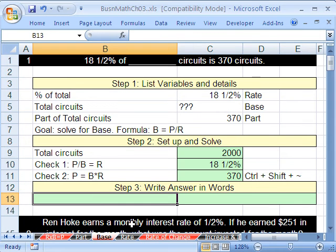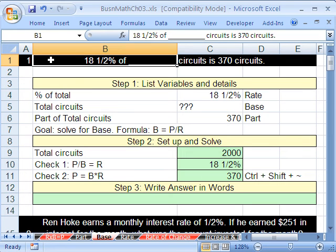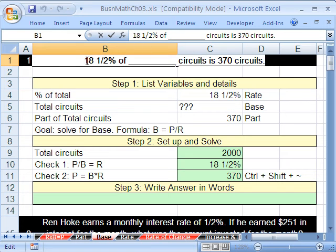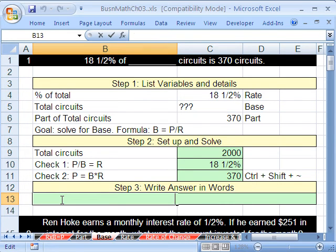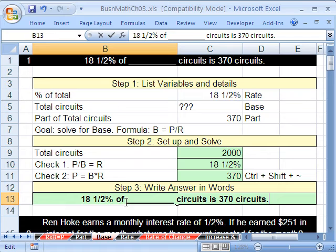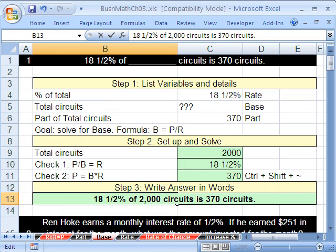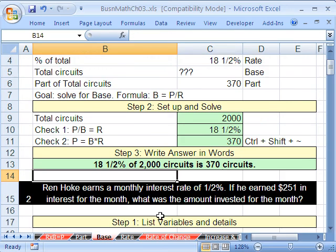Now we're going to write our answer in words. Watch this, I'm just going to come up here in F2 and I'm going to scoop this out, because we can literally just use the exact words from up here. I highlighted it, copy, now I'm going to hit Escape, I'm going to come down here and hit F2, which puts it in edit mode and paste. Watch this, I'm just going to highlight this little underline here and type in our answer, 2000. Eighteen and a half percent of 2000 circuits is 370 circuits.